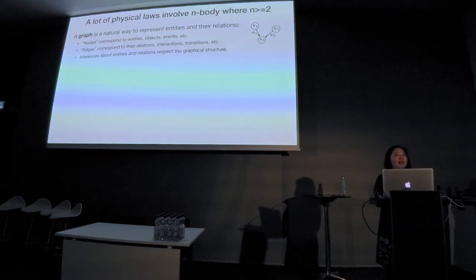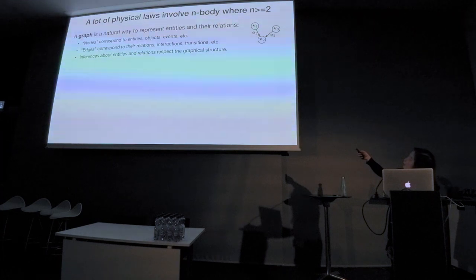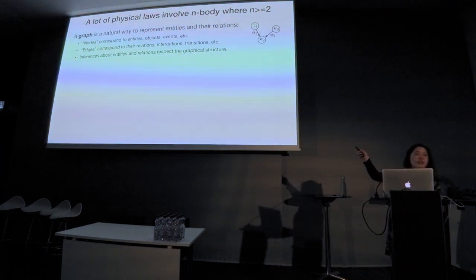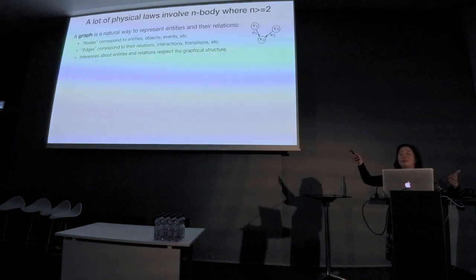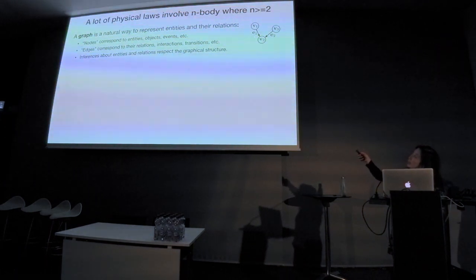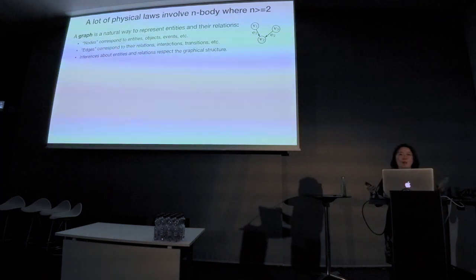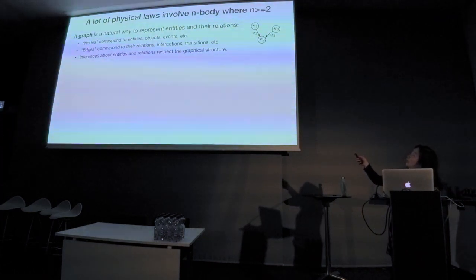A lot of physical laws involve N bodies, where N ≥ 2, so a graph is a natural way to represent these entities and their relationships. We have nodes represented by v1, v2, v3 and edges between them. Nodes represent entities — if you look at balls or planets, think of them as masses with positions and velocities as node attributes. The edges represent interactions: in our case, the gravitational law, probably just Newton's law. Forces can be bidirectional or unidirectional.